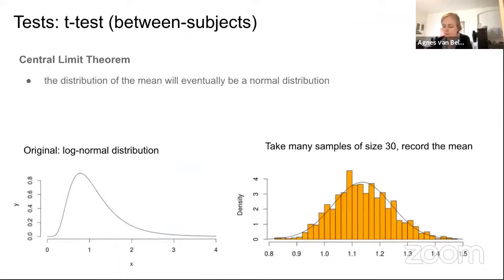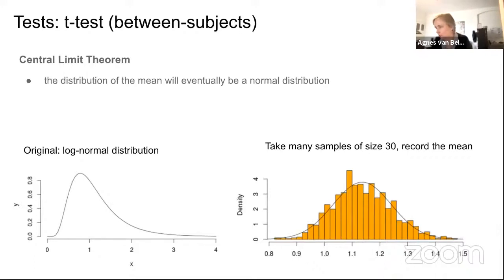The central limit theorem states that for any distribution, the distribution of the mean will eventually be normal. In the example, a log-normal distribution that clearly is not normal: if you take 100 samples each of 30 data points, compute the mean each time, and plot those means, you still get something that looks quite normal. This is why people say you can always apply the t-test — eventually, with enough samples, the mean will be normally distributed.